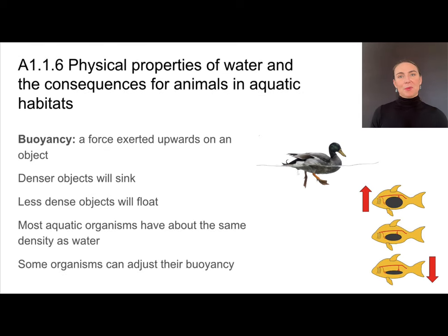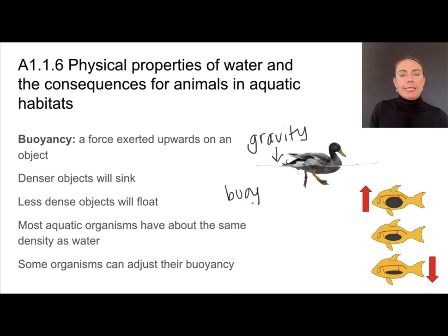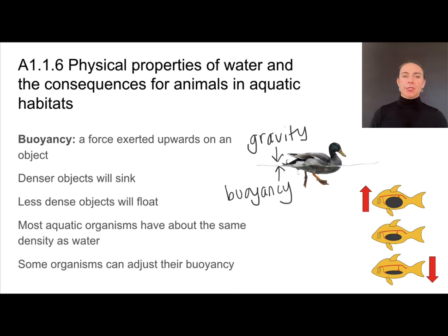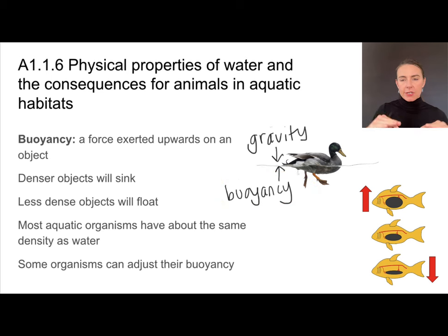Another important physical property of water is buoyancy. Gravity exerts a downward force, while buoyancy is the force exerted upward on an object by the water. When in the right balance, this allows objects or organisms to float. Less dense objects float on water because the buoyancy force is greater than the gravitational force exerted on them, while denser objects will sink.